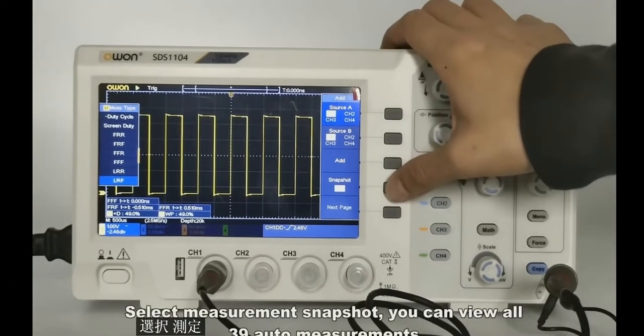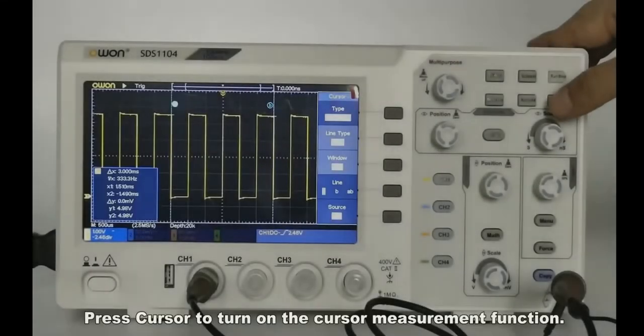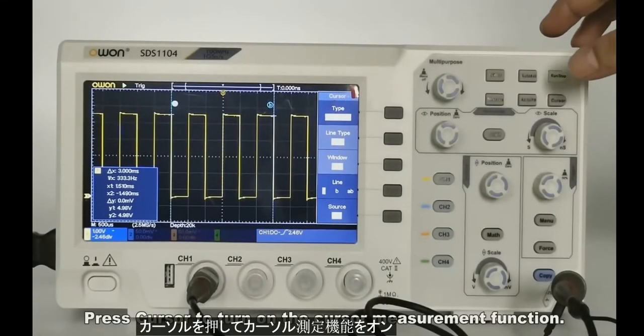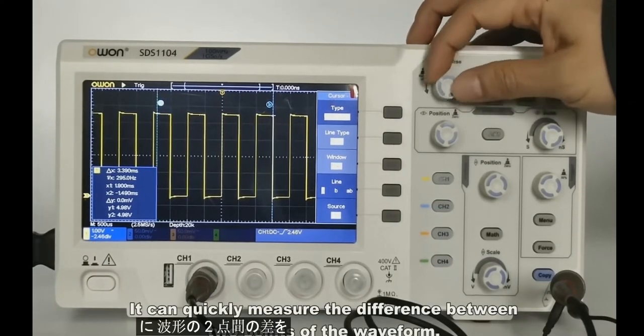Select measurement snapshot to view all 39 auto measurements. Press cursor to turn on the cursor measurement function, which can quickly measure the difference between two points of the waveform.